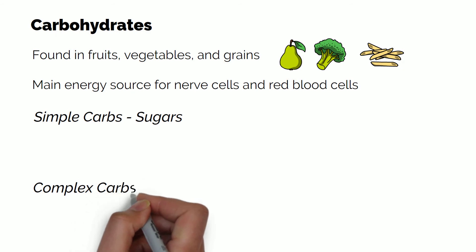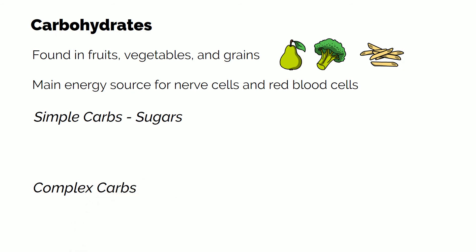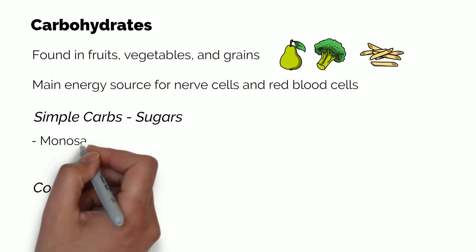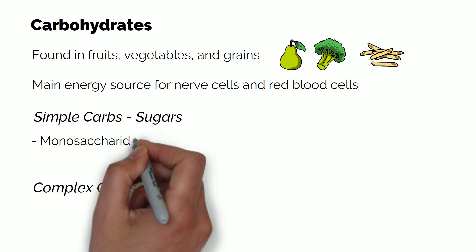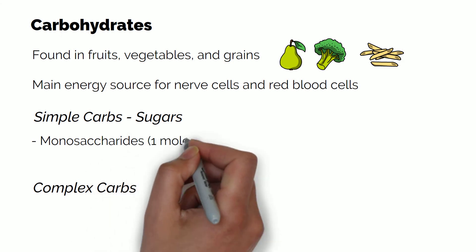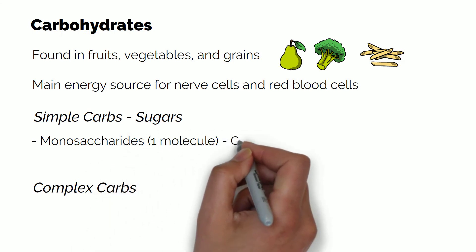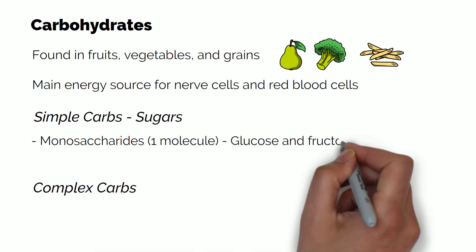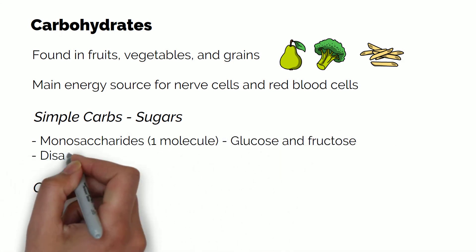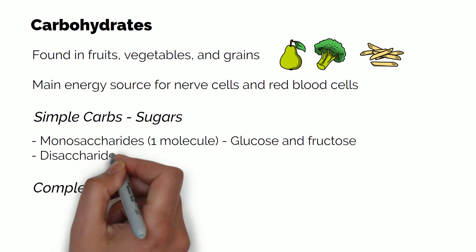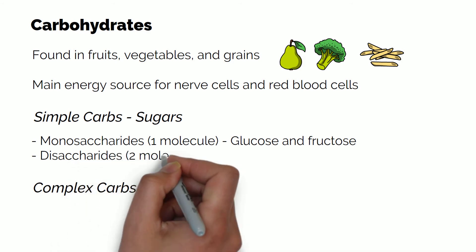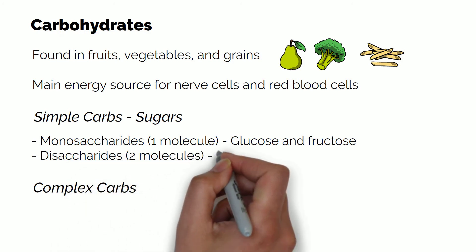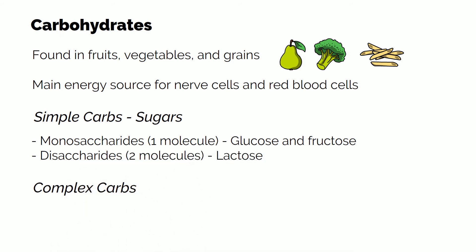Simple carbs are also called sugars and they exist in two forms: monosaccharides, when they are composed of a single molecule such as glucose and fructose, and disaccharides, when they are composed of two molecules, such as lactose.